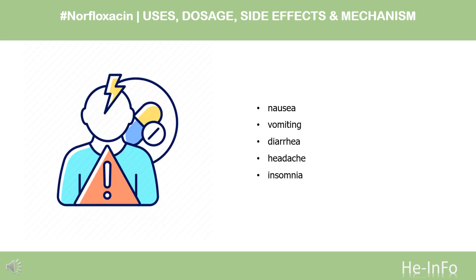Side effects. Common side effects include gastrointestinal effects such as nausea, vomiting, and diarrhea, as well as headache and insomnia. The U.S. prescribing information contains a warning regarding uncommon cases of peripheral neuropathy, which can be permanent. Other nervous system effects include insomnia, restlessness, and rarely seizure, convulsions, and psychosis. Other rare and serious adverse events have been observed with varying degrees of evidence for causation.